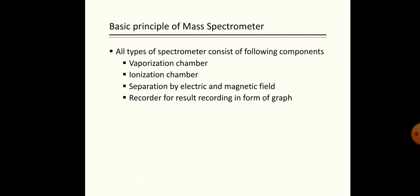Each type of spectrograph has a basic principle for identification of isotopes and for measurement of mass and relative abundance. It should have a vaporization chamber where vaporization of elements takes place, and an ionization chamber where ionization of isotopes takes place.